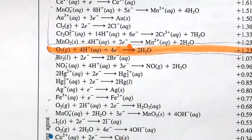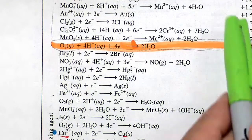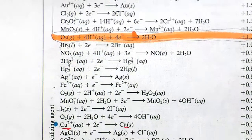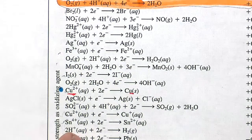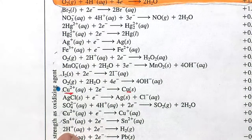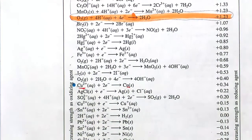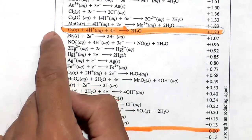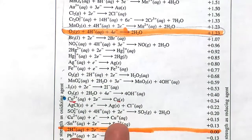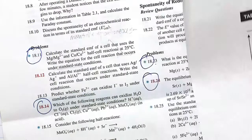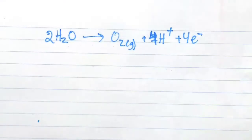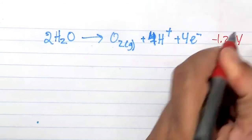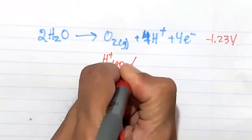Let's look at H⁺ aqueous. H⁺ aqueous is being reduced, so we flip it — H⁺ aqueous going to H₂ gas. Since the water oxidation half-reaction is at minus 1.23 volts, and the H⁺ reduction half-reaction is at zero volts, there's no way to get a positive value. So H⁺ cannot do this — we'll put a big X mark by it.